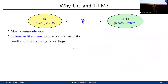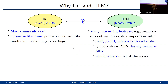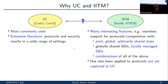We chose the UC model because it's the predominant model in the literature, with an extensive array of existing protocols and security results analyzed in a wide variety of settings. The IITM model, on the other hand, offers many interesting features, such as seamless support for protocols and composition with joint, global, and arbitrarily shared state. It can express globally shared session IDs commonly used in the UC model, but can also express locally managed session IDs and combine all of the above. Furthermore, there are protocols analyzed in the IITM model that have not yet been captured in the UC model, making a comparison — and ideally a mapping — particularly interesting.